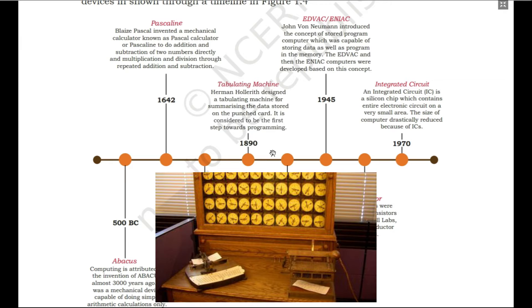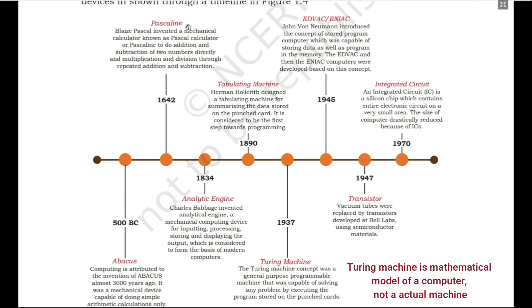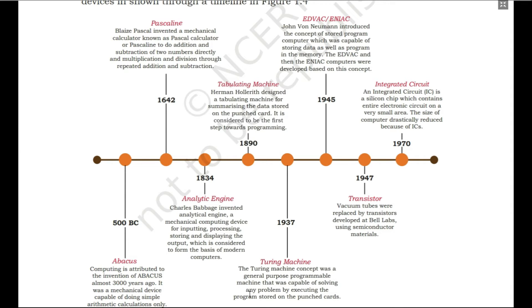Another major change happened in 1937 by Mr. Alan Turing. Turing proposed the Turing machine — a general purpose programmable machine that was capable of solving any problem by executing the program stored on punch cards. You store the program on the punch card, give it to the machine, and tell the machine to execute that program.